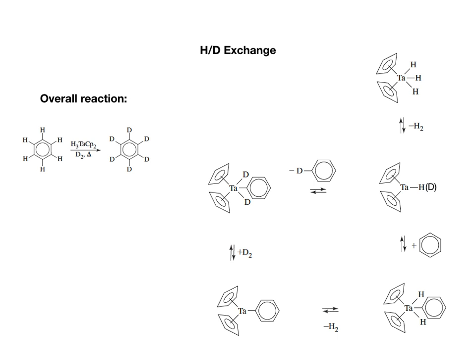After oxidative addition, you get the complex shown on the bottom right. It then undergoes reductive elimination, releasing a hydrogen molecule and producing the monophenyl complex with two Cp ligands. It then undergoes another oxidative addition, exchanging the two hydrogen atoms on the complex with two deuterium atoms. Finally, the deuterium complex undergoes reductive elimination where the phenyl ring is bonded with a deuterium atom instead of hydrogen, reproducing the tantalum complex. This exchanges one hydrogen atom on the benzene with one deuterium atom — if this cycle repeats, all hydrogens on the benzene are gradually replaced by deuterium.